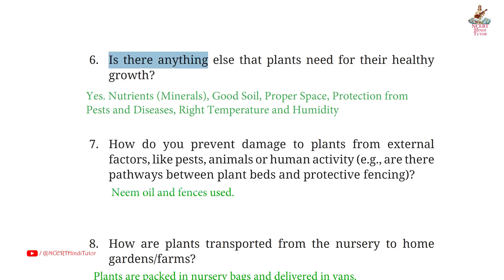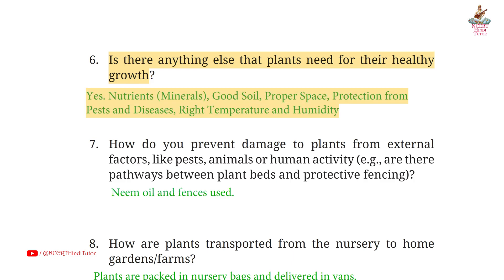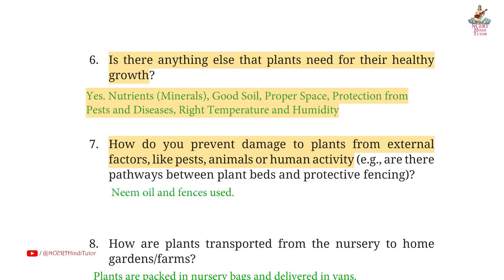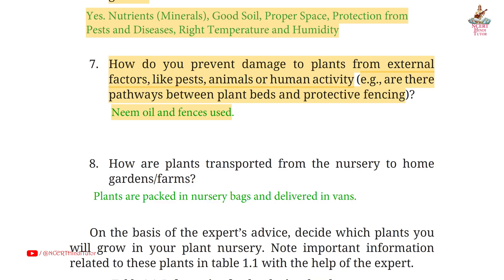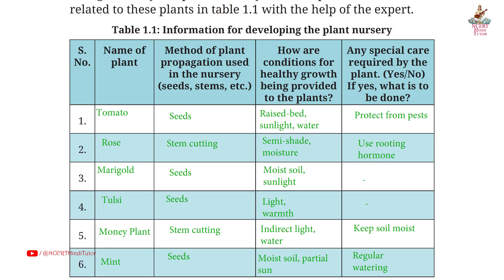Page 10, Question 6: is there anything else that plants need for healthy growth? Answer: yes — nutrients, minerals, good soil, proper space, protection from pests and diseases, right temperature and humidity. Question 7: how do you prevent damage from pests, animals, or human activity? Answer: neem oil and fences used. Question 8: how are plants transported from the nursery to home gardens or farms? Answer: plants are packed in nursery bags and delivered in vans.